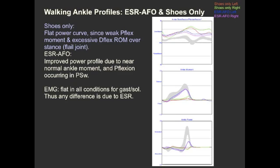In the shoes-only condition, you can see that the ankle passively extends throughout the stance phase, and that the joint is largely flail, as shown here in the moment curve. This results in what I would consider a fairly flat power curve. If we compare that to the ESR AFOs, there's a significantly improved power curve, due in part by improved ankle motion. The blue and purple curves show a more normal profile with some plantar flexion actually occurring during stance phase.